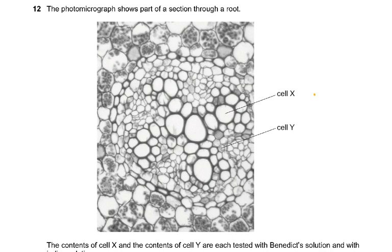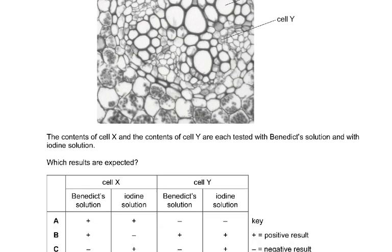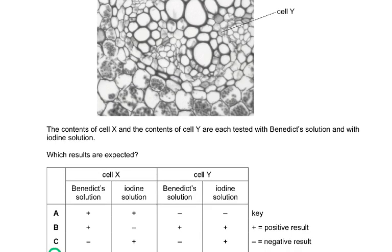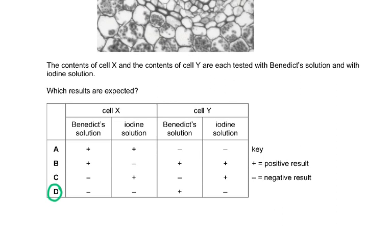Question twelve: the photomicrograph shows a section through a root. Cell X is xylem, cell Y is phloem. Their contents are tested with Benedict's and iodine solution. For cell X: no sugar in xylem, no starch — both negative. For cell Y: no starch, so iodine is negative. However, there could be some sugars in the phloem, so Benedict's for cell Y may give a positive result.